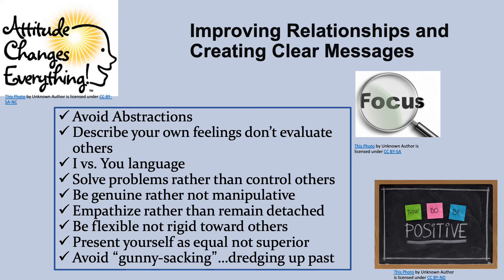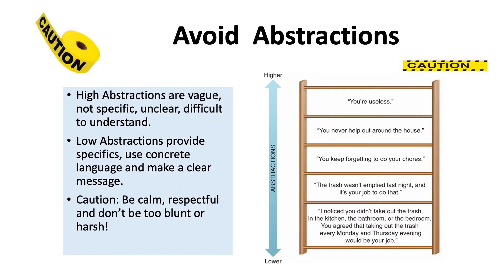Let's check out abstractions. When we have a high abstraction, that means it's vague — not specific, unclear, difficult to understand. Low abstractions are less vague; they are more specific and concrete. So we want low-level abstractions, meaning we want to be more specific. We also want to make sure that we remain calm and respectful — we don't want to be too blunt and harsh. That is very easy to do with friends and family, but it doesn't mean that it's acceptable.